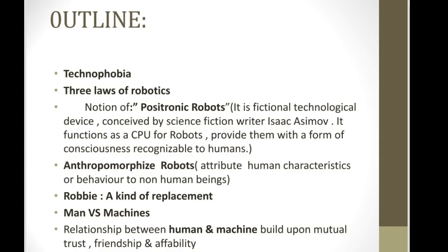The topic we are going to discuss today is Robbie, which is written by Isaac Asimov. As you can see, a manik outline has been created for your self-guidance so that you can get an overview of this chapter and know the major concerns and major aspects we are supposed to cover. The first one is technophobia, which is one of the major themes of this chapter, which we will discuss later in detail. The second one is the Three Laws of Robotics, given by Isaac Asimov.